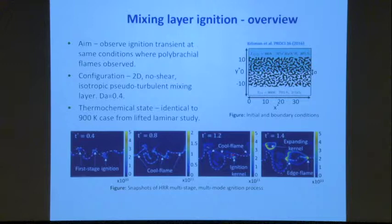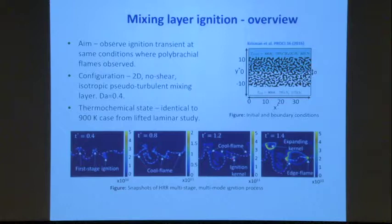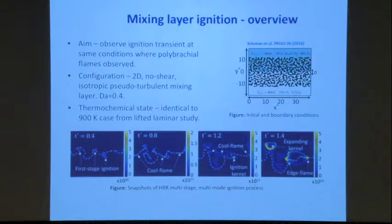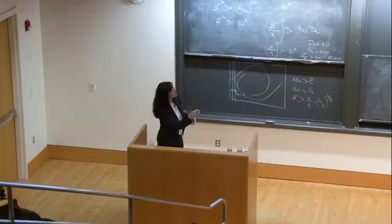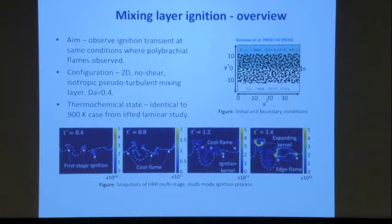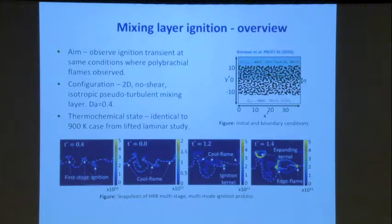These hot ignition kernels generate outwardly propagating edge flames that move along the stoichiometric isoline consuming the fuel, eventually propagating and merging with one another. This continues until the entire stoichiometric isosurface interface is lit up, stabilized by this edge propagation mechanism some distance downstream of the injector.